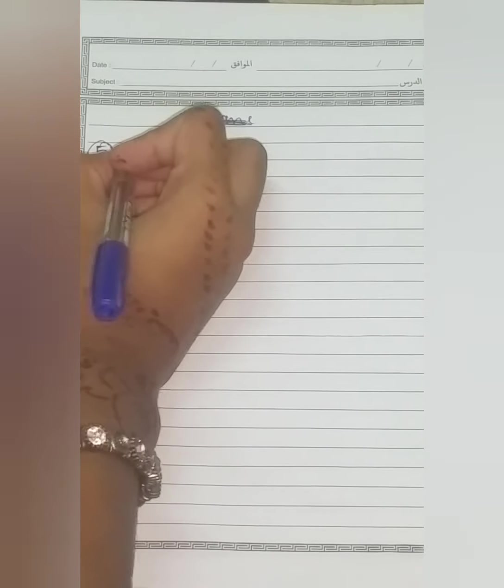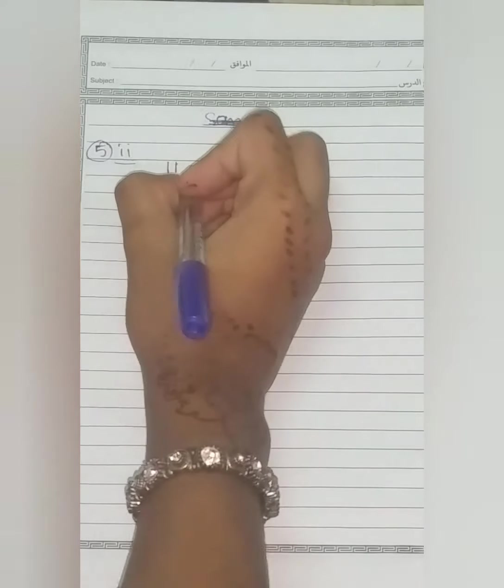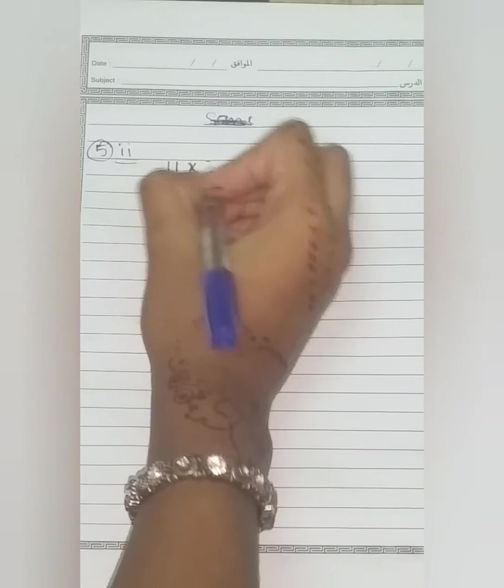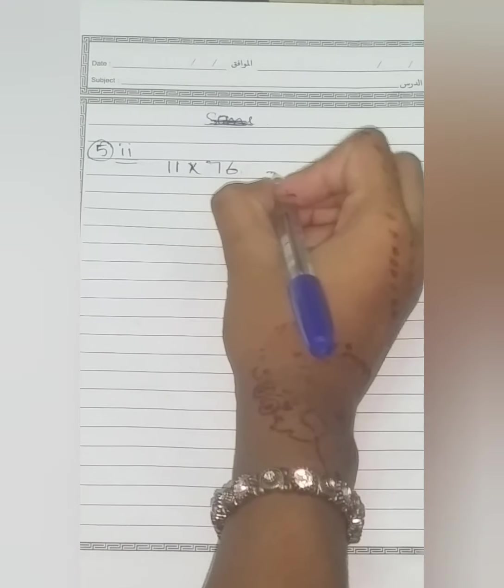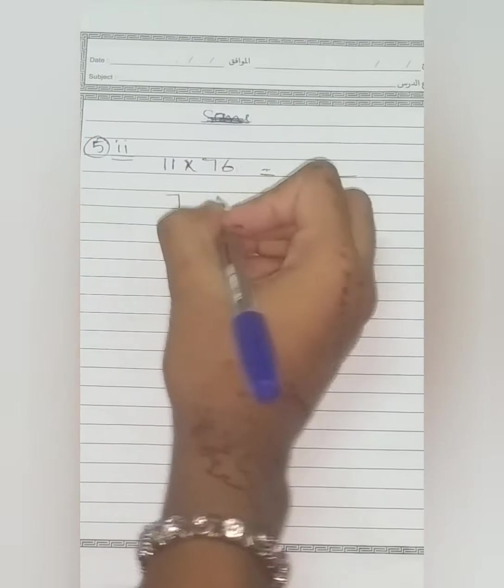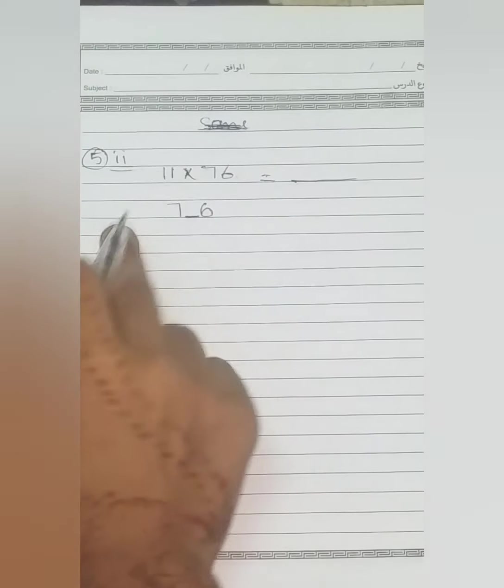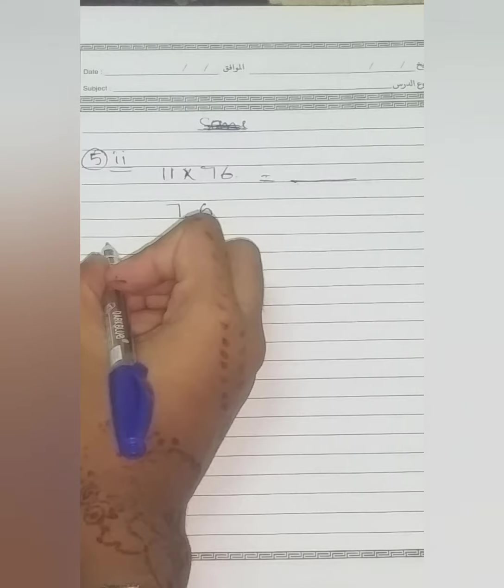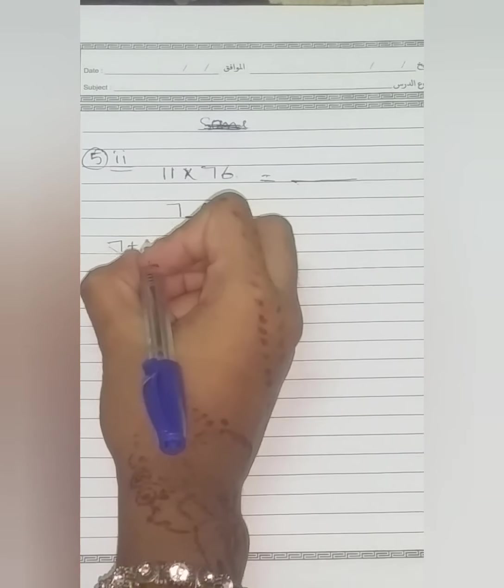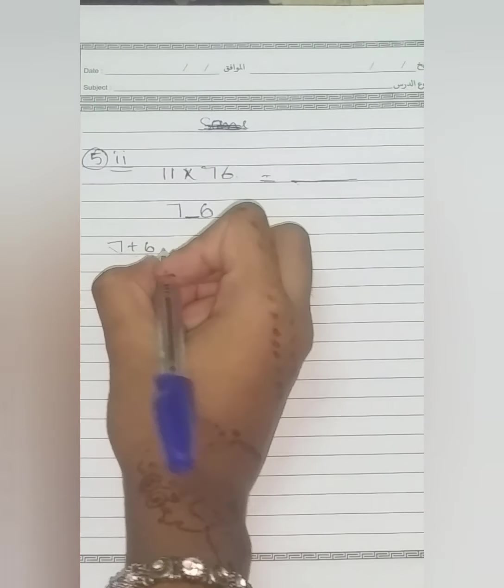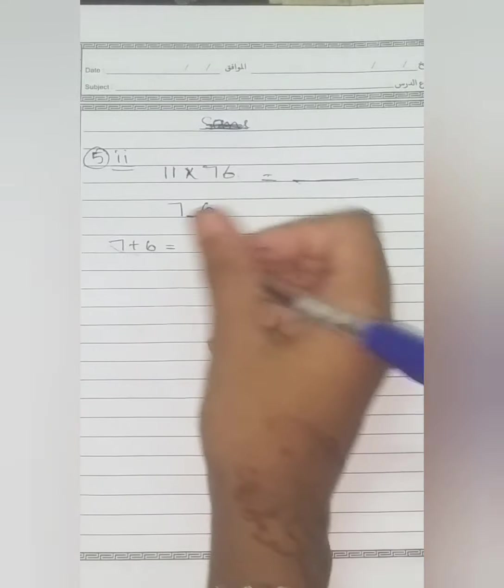Now here our next step, our next question towards the same hack is 11 into 76. This is quite a big number. So that's why I took it. So first of all, here we write 7 and 6 as we did in previous question. Now 11 into 76. When we add 7 and 6, the answer we get is quite big. That is 13. It is a two digit number.